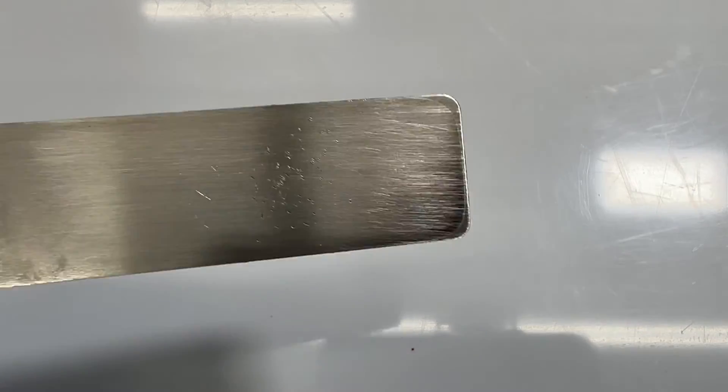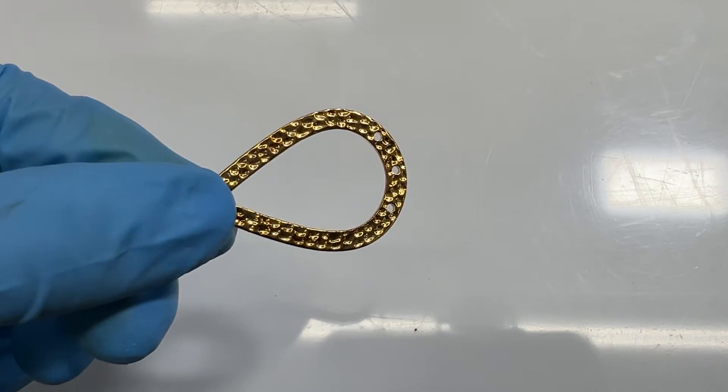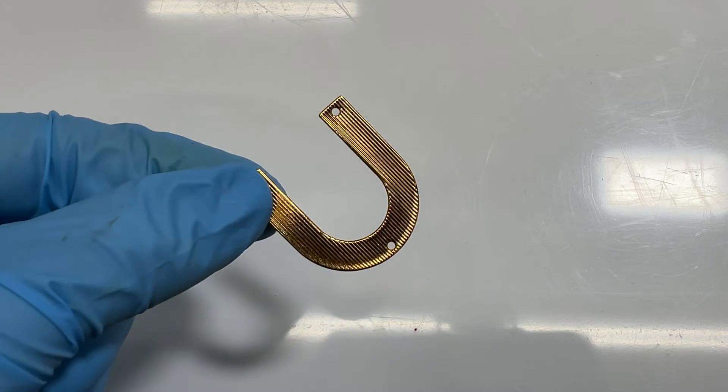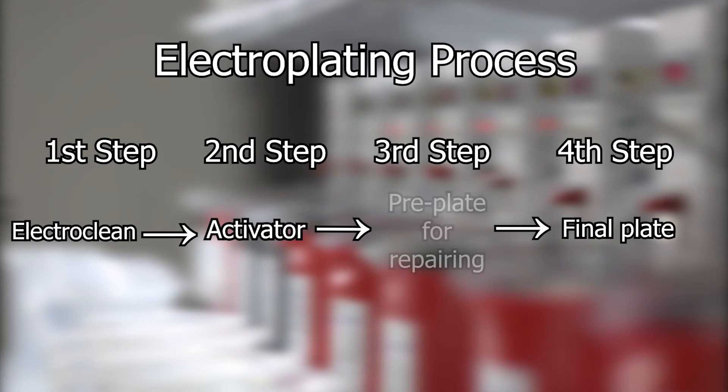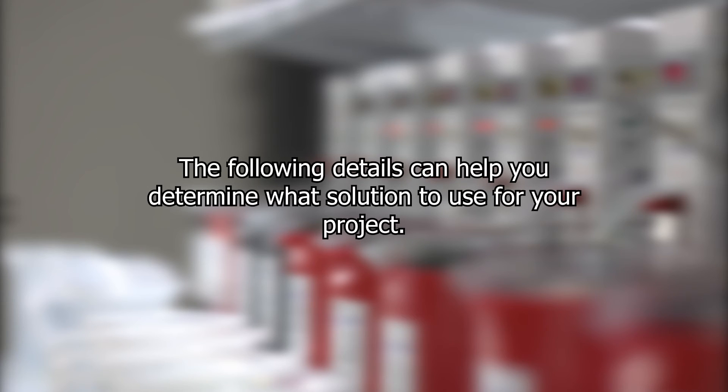If there are scratches, flaws, pitting, or texturing on your piece that you'd like to fill in and repair before the application of a final plate, step three in your plating process might include a pre-plate of either bright nickel or bright acid copper. The following details can help you determine what solution to use for your project.